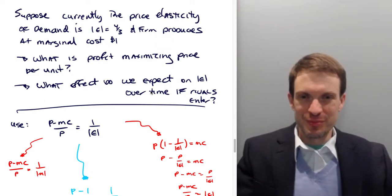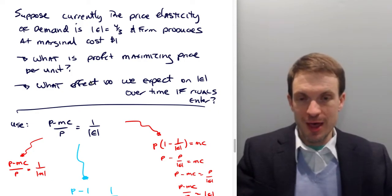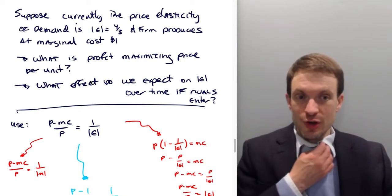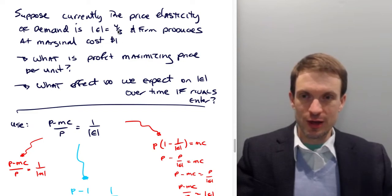You should be able to answer the second one pretty quick. We would expect with entry, demand is going to become more elastic. We're going to have demand more responsive to price. Why? Because customers are going to have additional options. One of the key determinants of price elasticity of demand is the availability of substitutes. More rivals means more substitutes, so we'd expect price elasticity of demand is going to rise, going to be something bigger than four thirds over time with entry.